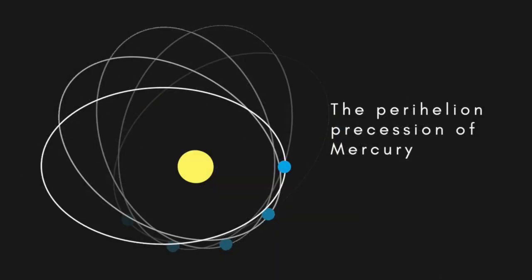The starting point of the General Theory, known as the Equivalence Principle, is that frames of reference undergoing acceleration and frames of reference in gravitational fields are equivalent.